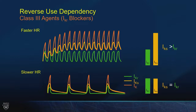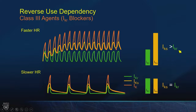Class 3 agents demonstrate reverse use dependence — maximum effect at slow heart rates. The reason involves two repolarization currents: IKS (slowly activating, slow kinetics) and IKR (rapid). At faster heart rates, IKS accumulates and becomes the more dominant repolarization current. Because most drugs that cause QT prolongation are IKR blockers, they don't have much effect at faster heart rates — IKS rescues the situation. At slower heart rates, IKS and IKR both contribute equally to repolarization, making patients vulnerable to QT prolongation from IKR blockers.